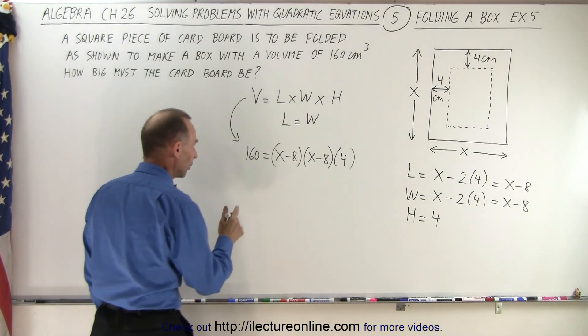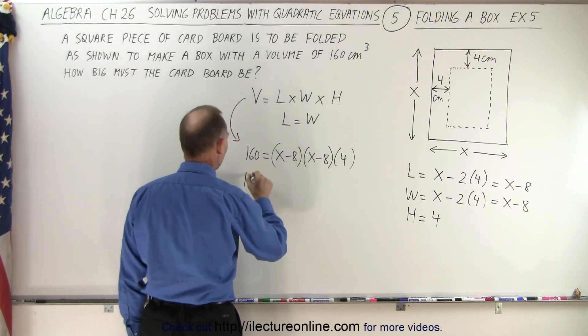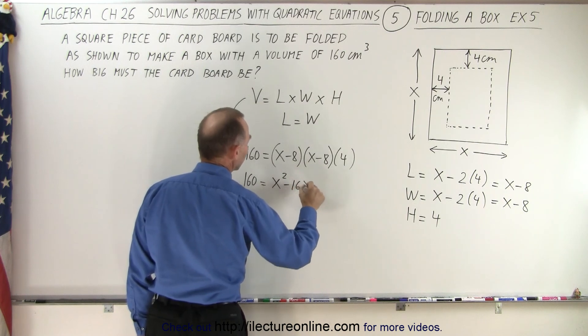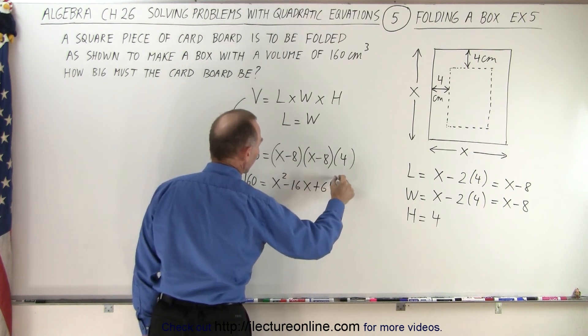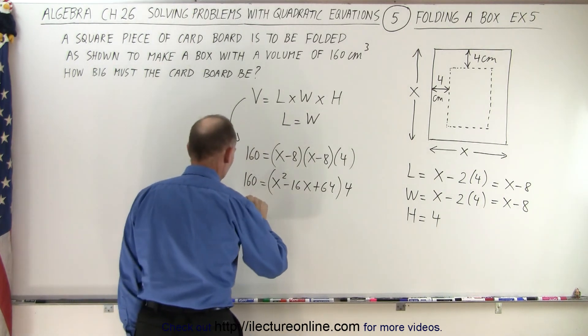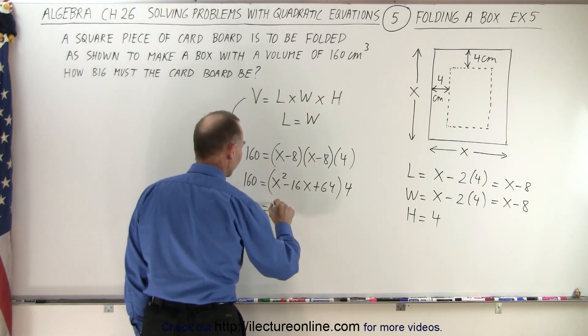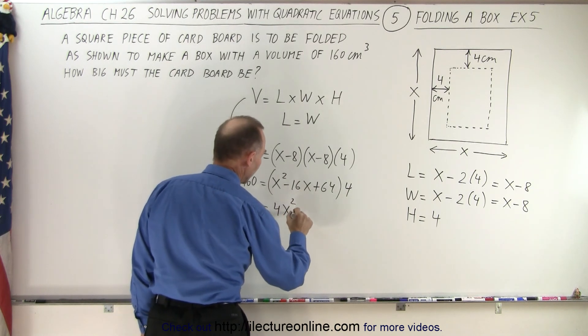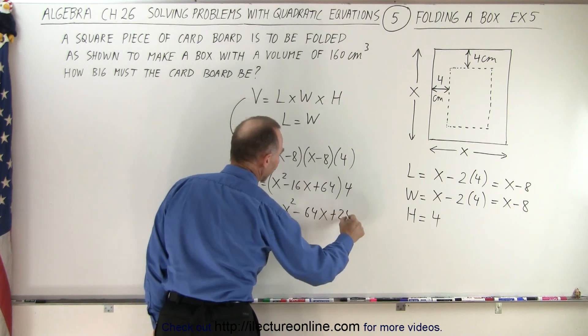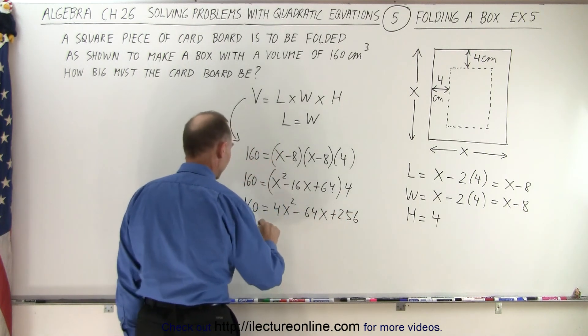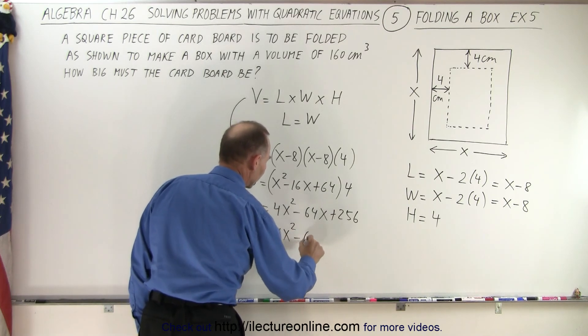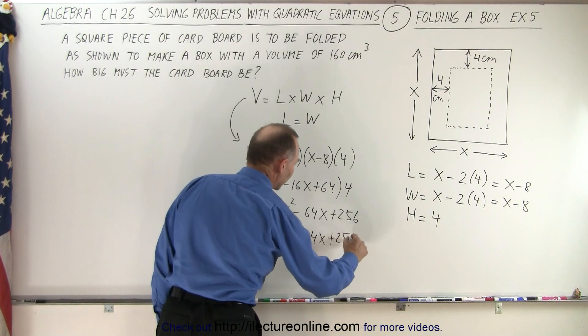So let's first multiply everything on the right side. So we have 160 is equal to x squared minus 16x plus 64 times 4. Now we can go ahead and continue multiply everything out, so 160 is equal to 4x squared minus 64x plus 256. And now we can move the 160 over, so we have 0 is equal to 4x squared minus 64x minus 160.